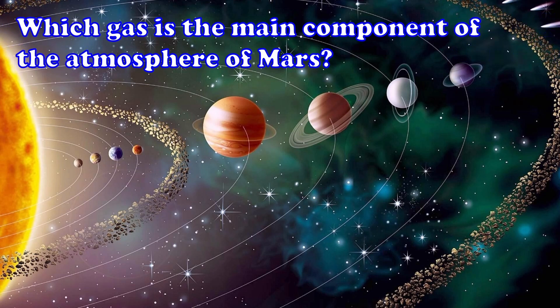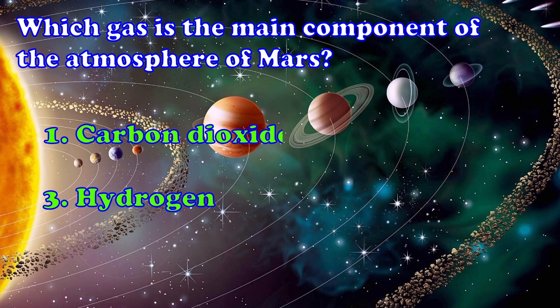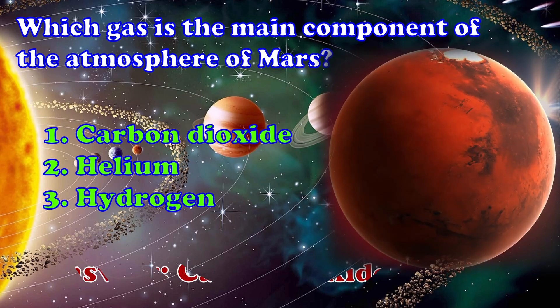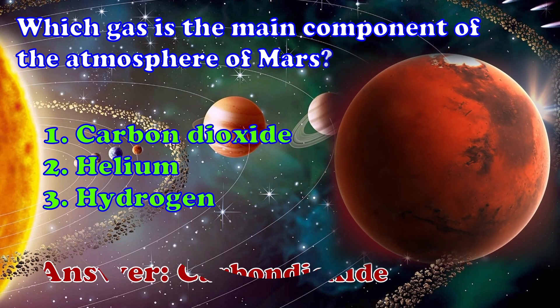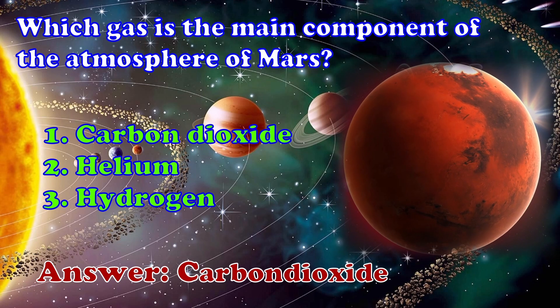Which gas is the main component of the atmosphere of Mars? 1. Carbon Dioxide 2. Helium 3. Hydrogen. The answer is Carbon Dioxide.